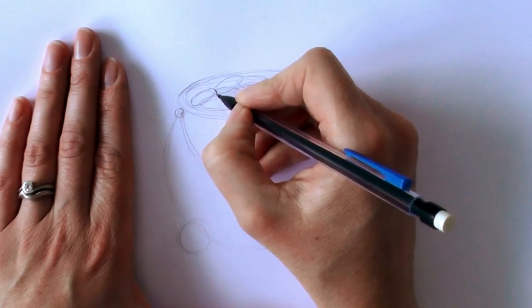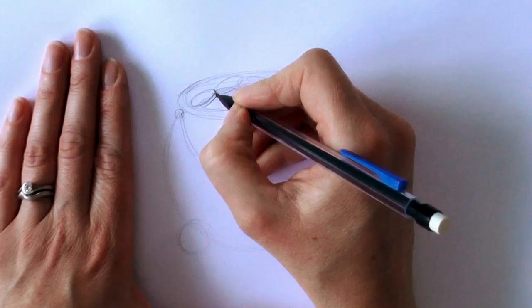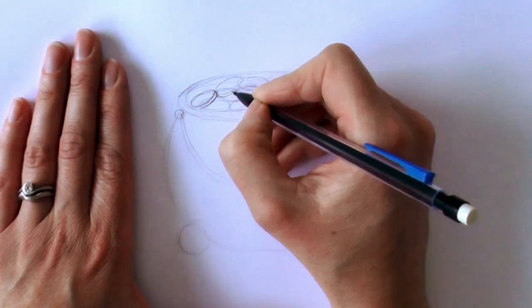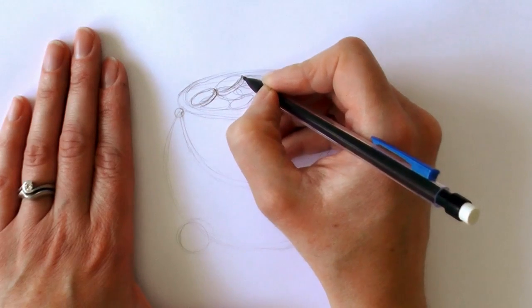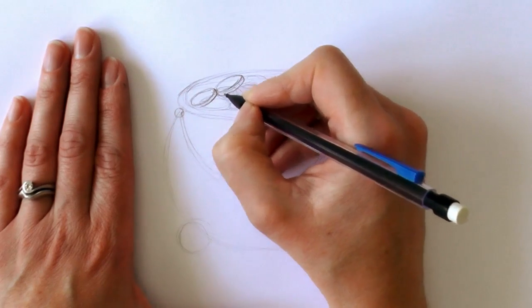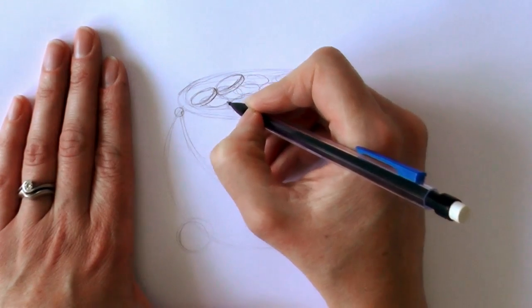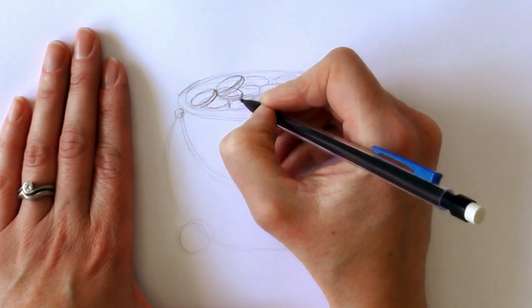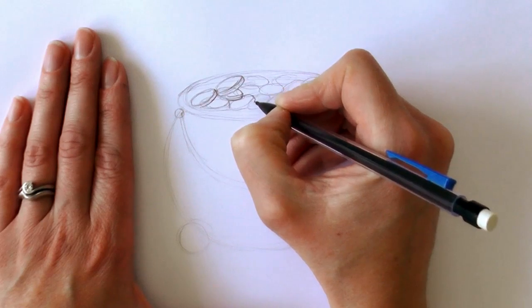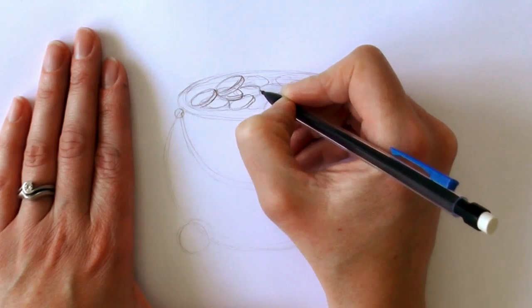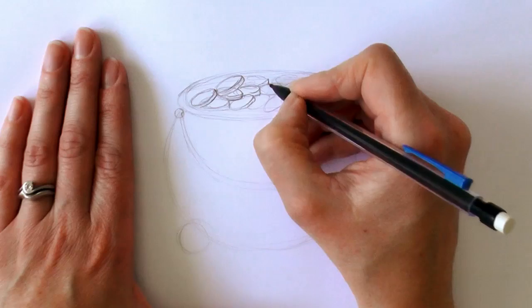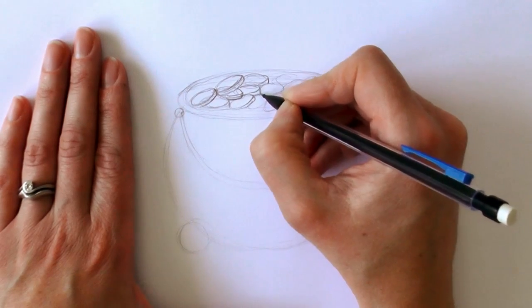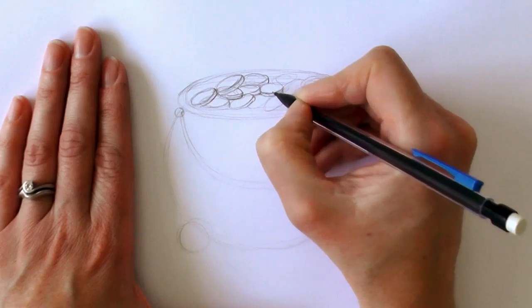Then just go through and add a little line down the side of each one and just thicken it up just to give it a bit of thickness. And this is just to show that they look like coins rather than just flat ovals.